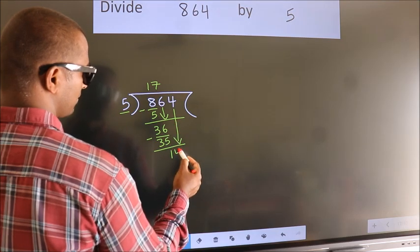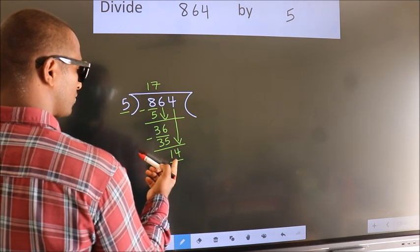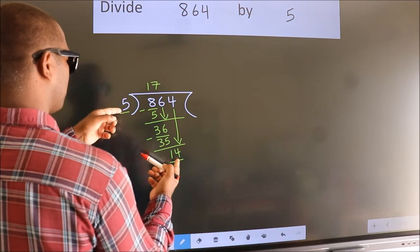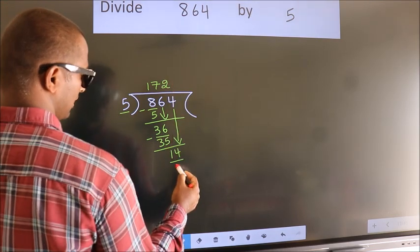So, 4 down. So, 14. A number close to 14 in 5 table is 5 2s 10.